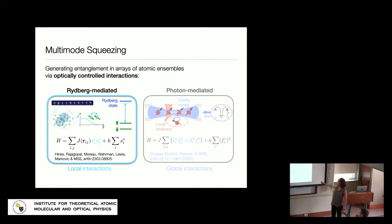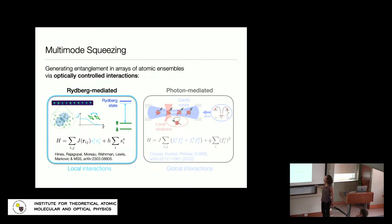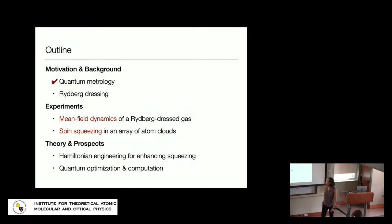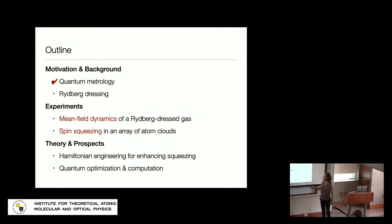This talk is about interactions generated by Rydberg dressing. For context, we also employ another approach combining global interactions mediated by photons with local rotations, which you can read about separately. I've given background on why we might want to engineer squeezed states using Rydberg interactions. Today I'll cover the Rydberg dressing approach, discuss a couple of experiments characterizing interactions and applying them to squeeze, and talk about prospects in Hamiltonian engineering for enhancing squeezing and directions in optimization and computation.